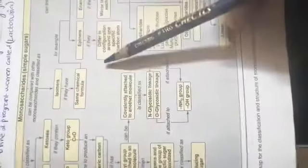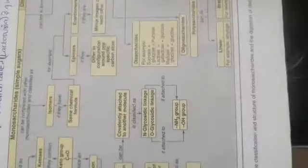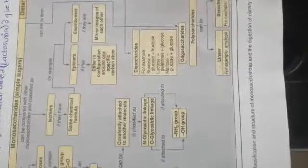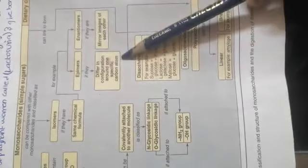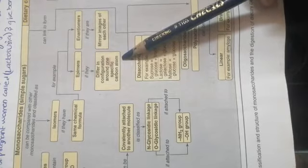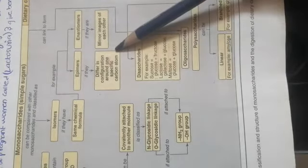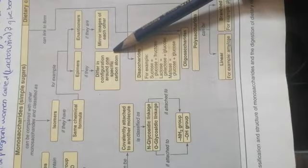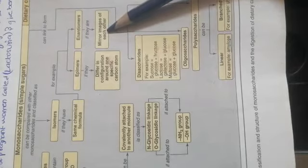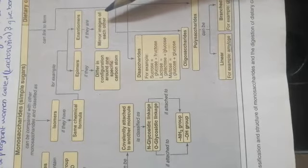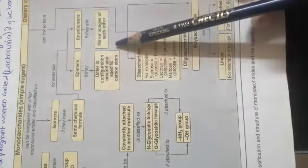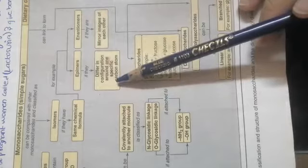If we are going to give the isomers for monosaccharide sugar, there will be epimers and enantiomers. What are epimers? If they differ in the configuration of only one carbon atom, like mannose and glucose — if they have a difference at carbon number two or carbon number four — then they are called epimers. While in enantiomers, they are mirror images of each other, like D-glucose and L-glucose, which are dextrorotatory or levorotatory.